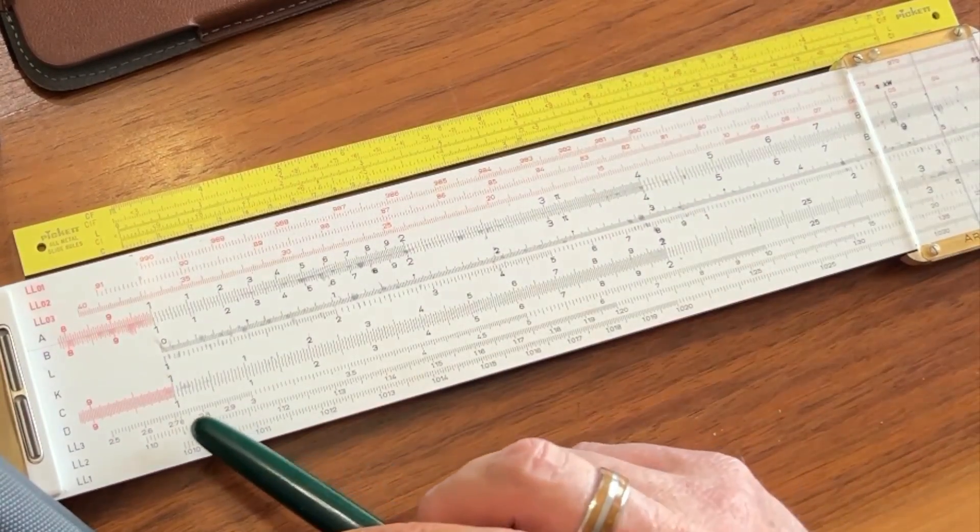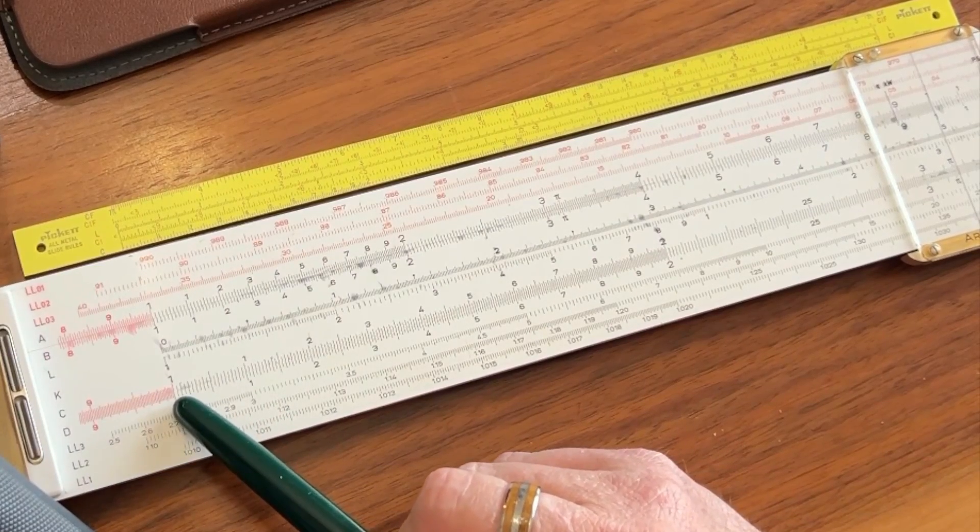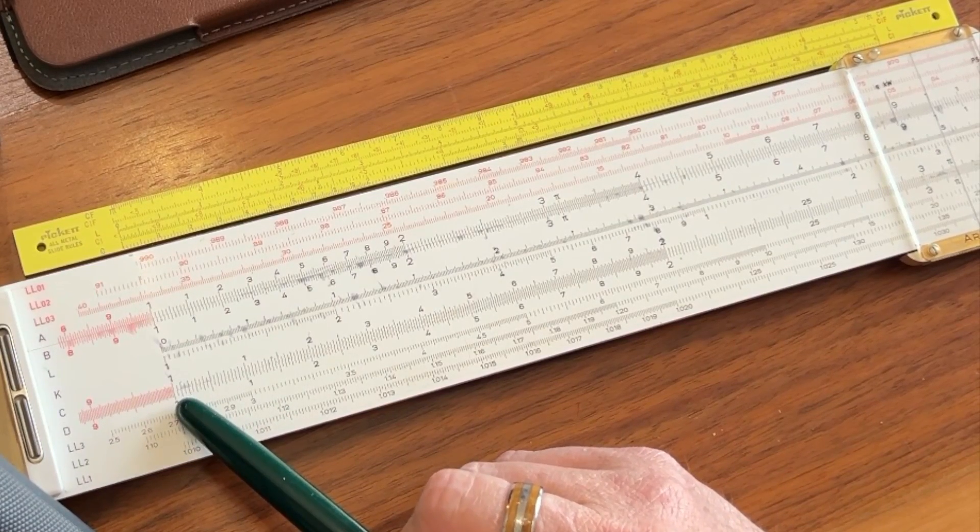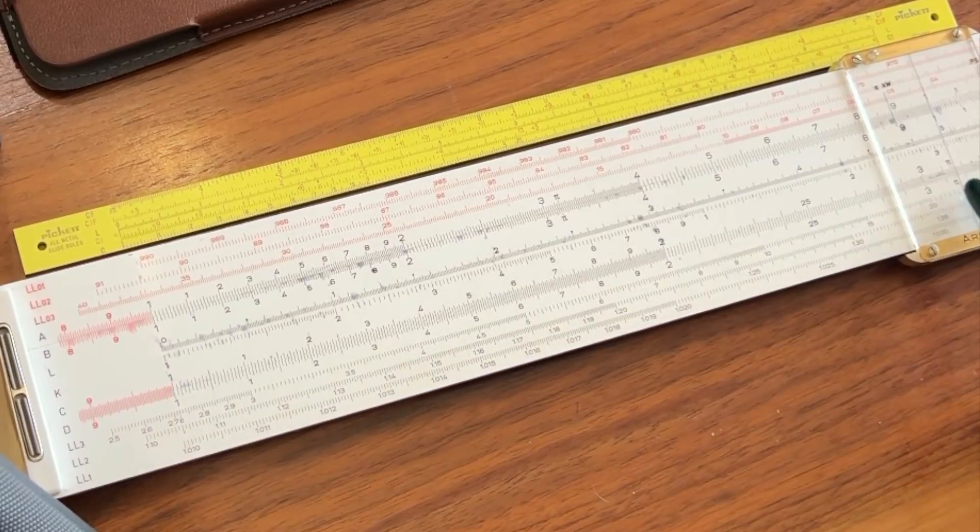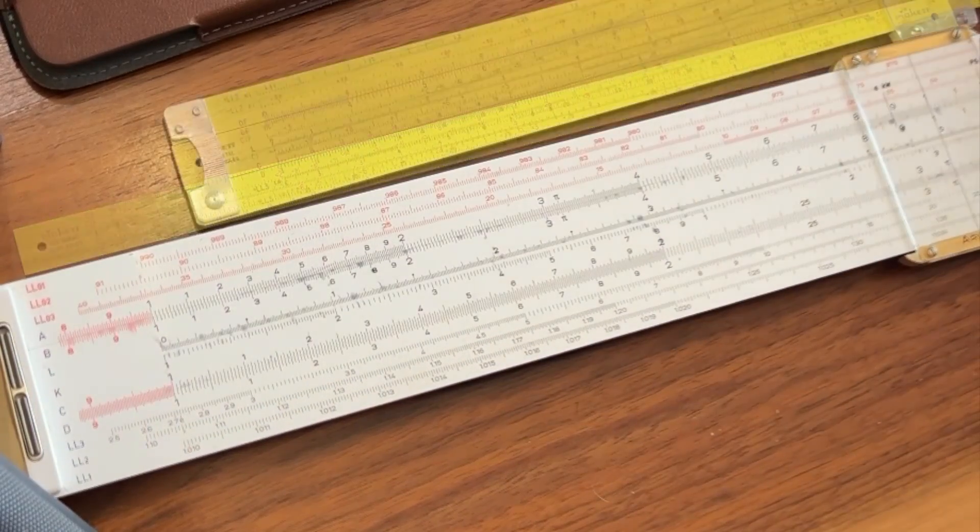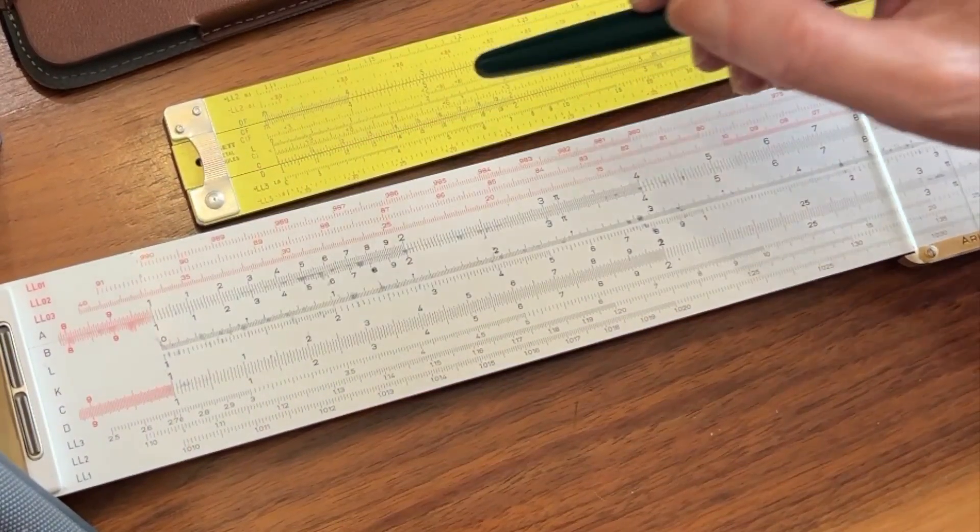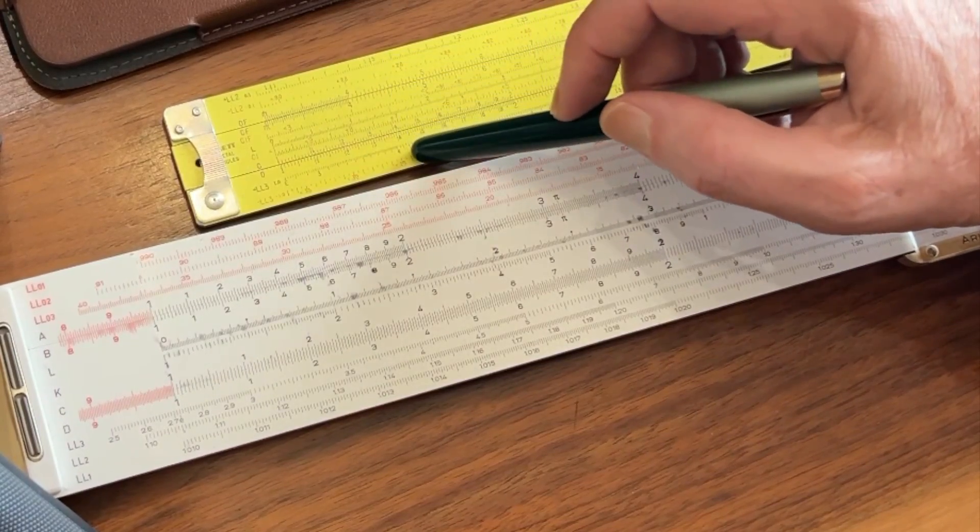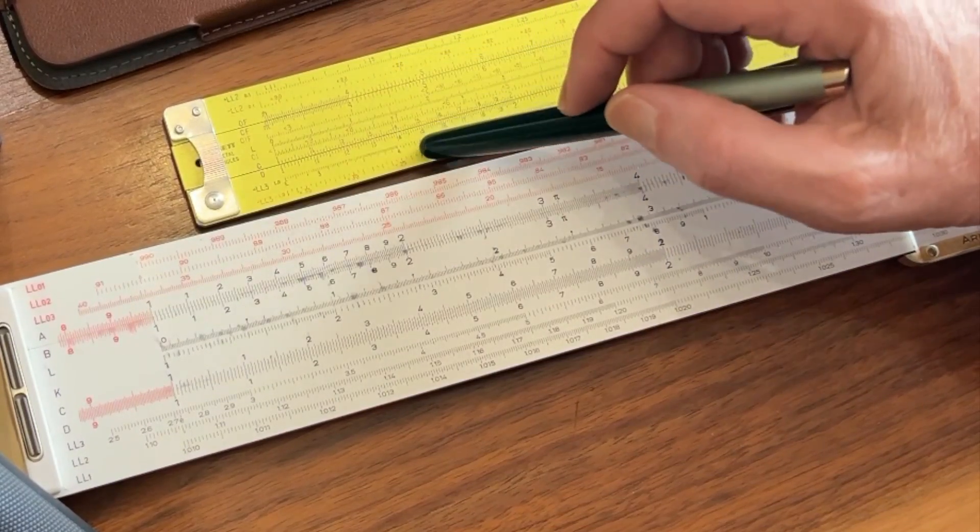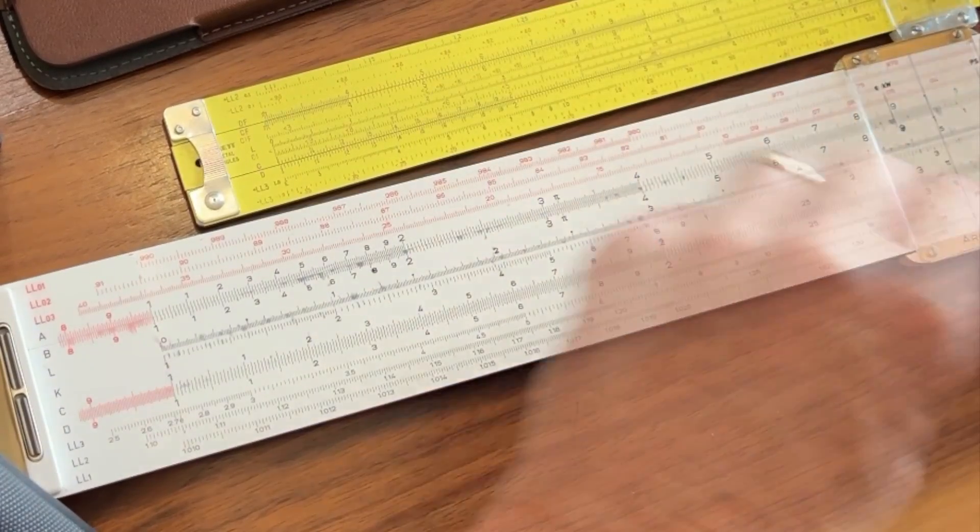Well, what if I had a scale on my slide rule that was twice the length of my C scale but only went from 1 to 3.16? What would happen is that I could very accurately come down from that scale and get the square of the number on my C and D scale.